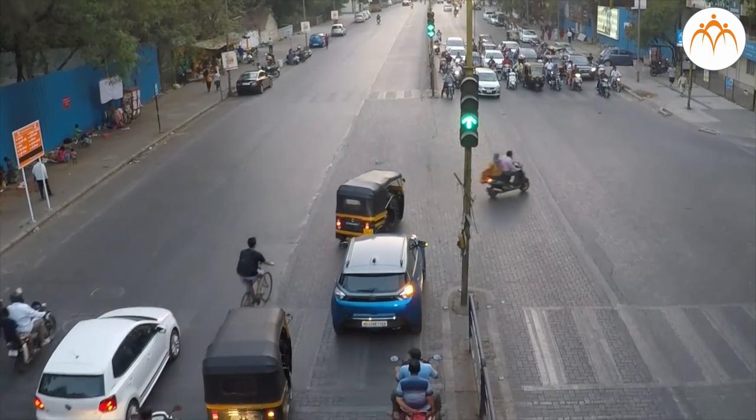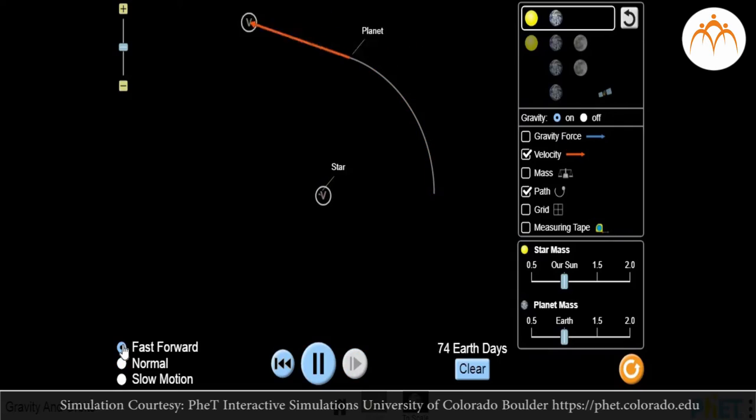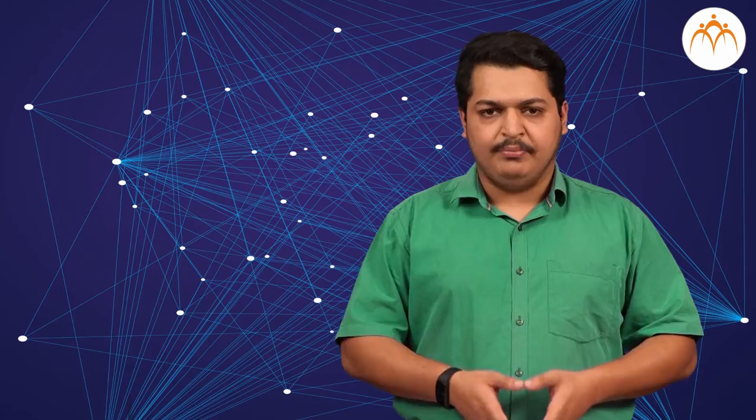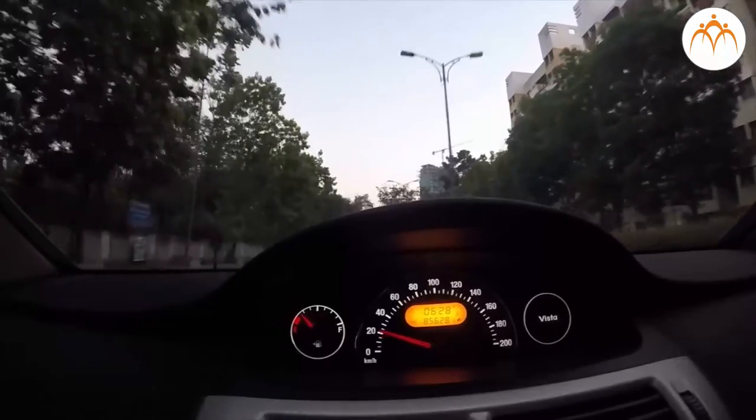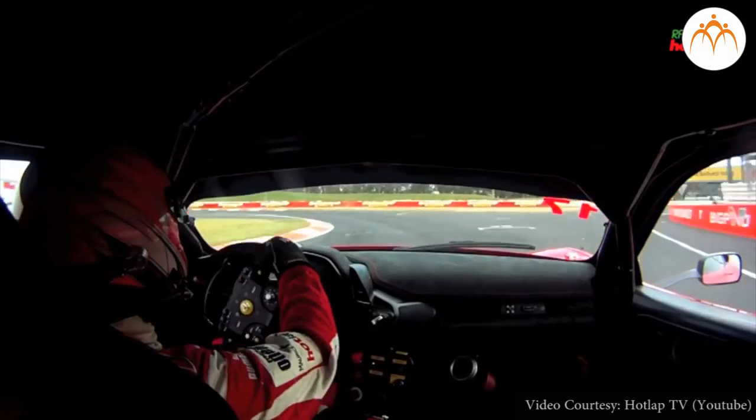When the velocity of an object changes, it is said to be accelerating. Acceleration is the rate of change of velocity with time. A falling fruit accelerates, a car stopping at a traffic light accelerates, and an orbiting planet accelerates. Acceleration occurs any time an object's speed increases or decreases, or it changes direction.